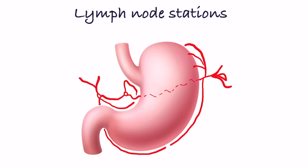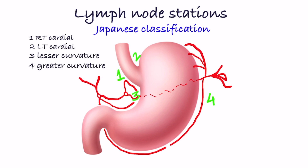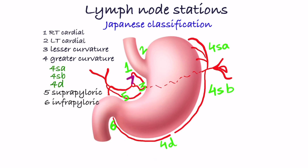Let us revise the lymph node stations as per Japanese classification. Station 1: Right cardial. Station 2: Left cardial. Station 3: Lesser curvature. Station 4: Along greater curvature — divided into 3 groups from above to below: 4S along short gastric vessels, 4SB along left gastroepiploic vessels, and 4D along right gastroepiploic vessels. Station 5: Suprapyloric. Station 6: Infrapyloric.